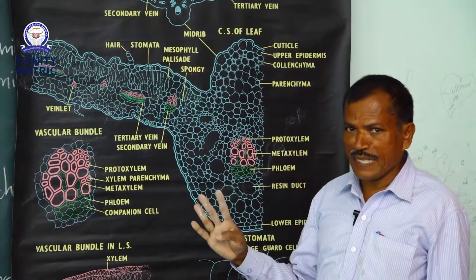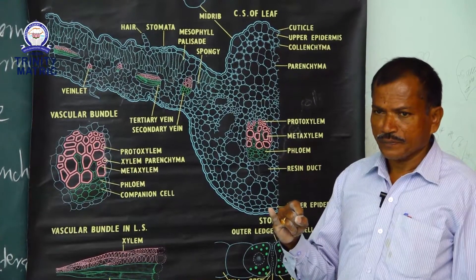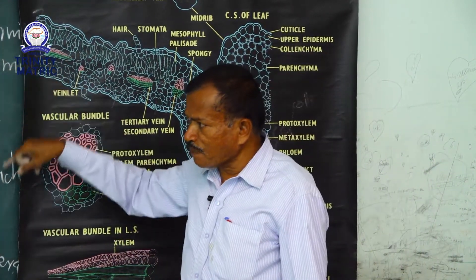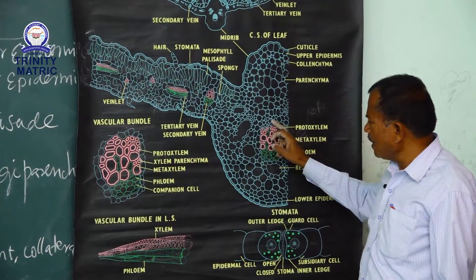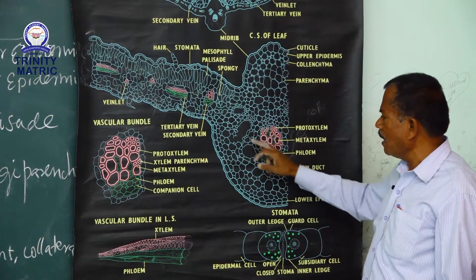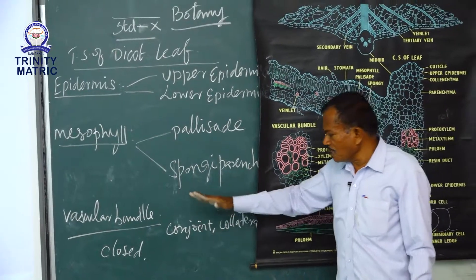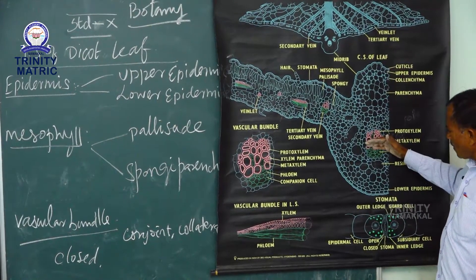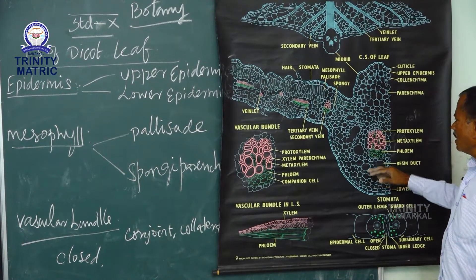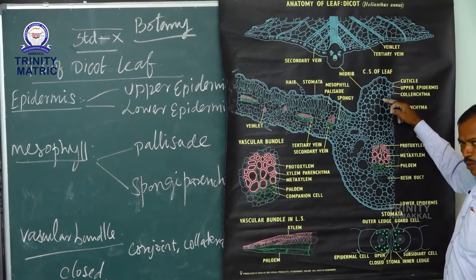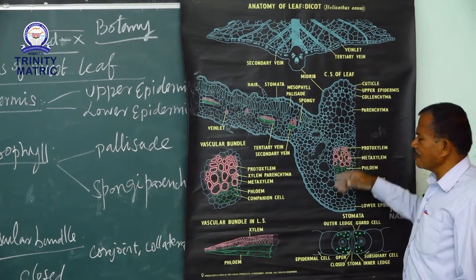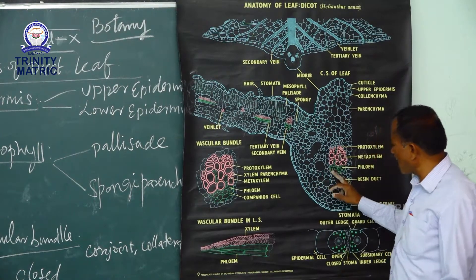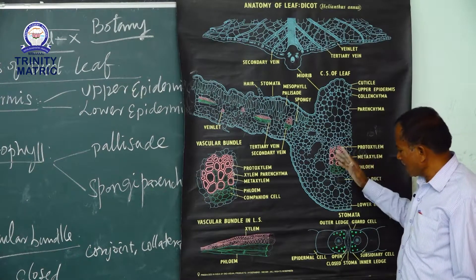Inside the vascular bundle, as in stem and root, there is xylem and phloem. Xylem faces towards the upper epidermis and phloem faces the lower epidermis. The protoxylem faces the outer side. Xylem consists of tracheids, vessels, xylem parenchyma, and fibers. Phloem consists of sieve tubes and companion cells. Phloem parenchyma and phloem fibers are absent in leaves.